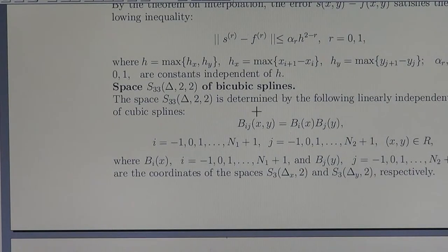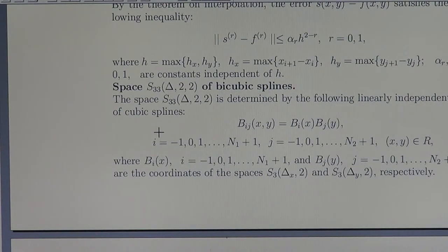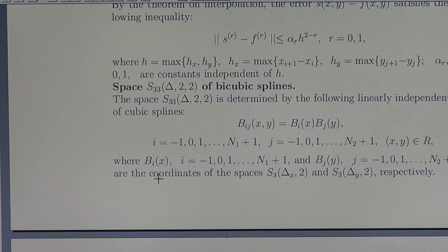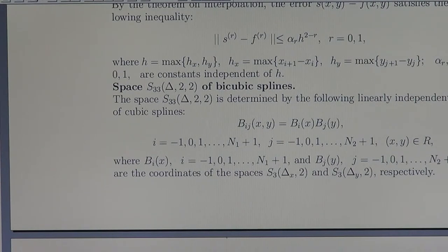Now the space S_{3,3}(delta, 2, 2) of cubic splines — bicubic splines. This space is determined by the following linearly independent set of cubic spline coordinates. The coordinates B_{i,j} are similarly products of the one-dimensional cubic B-spline coordinates. These are given by the formula we recall from before, and we go from the one-dimensional space to the two-dimensional space by this product as the coordinates in the cubic spline space.